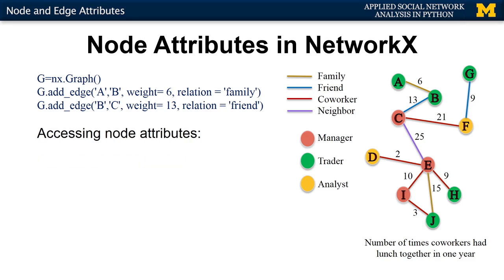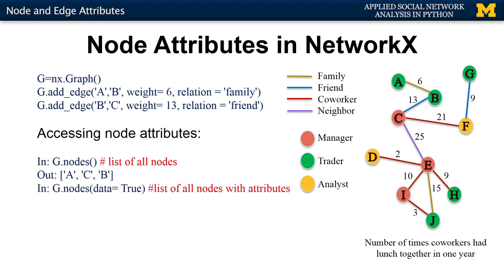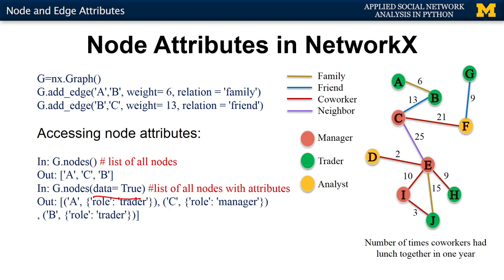To access node attributes, we use the `nodes` function to get a list of all nodes. Adding `data=True` gives us each node along with a dictionary of its attributes and values. If we want just a particular attribute for a particular node, we use `node` instead of `nodes`, specify which node and which attribute we want, and it would return that value — for example, telling us that node A is a trader.